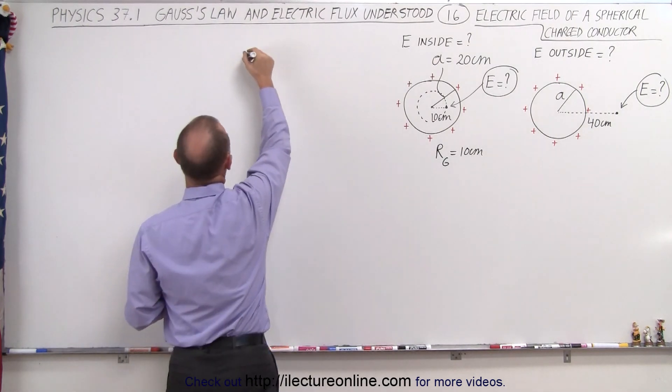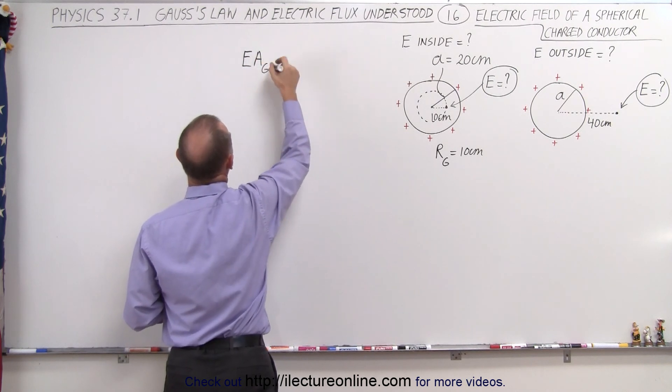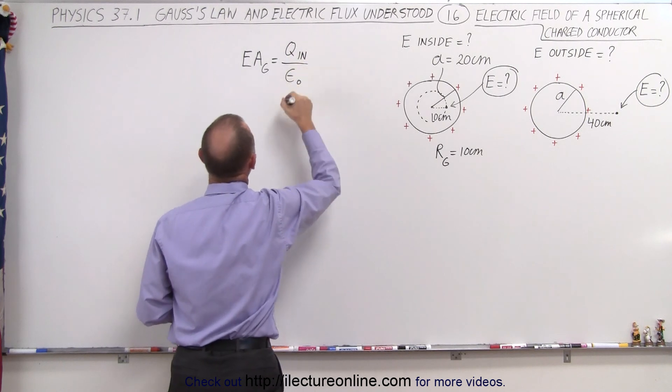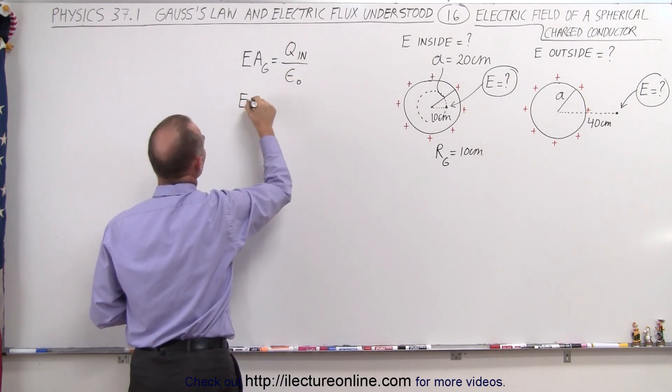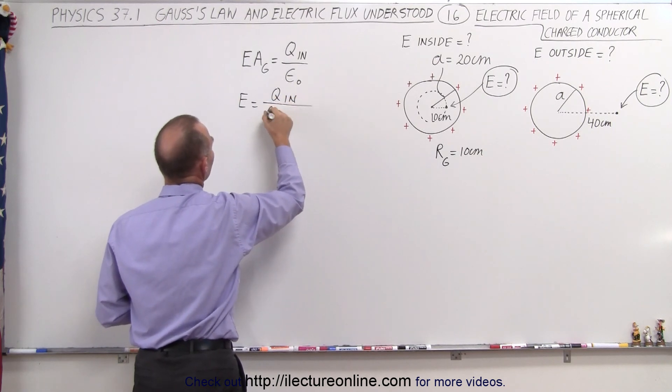Now let's go ahead and use Gauss's law, which in its simple form is the electric field times the Gaussian surface area is equal to the charge that's inside the surface divided by epsilon sub-naught.